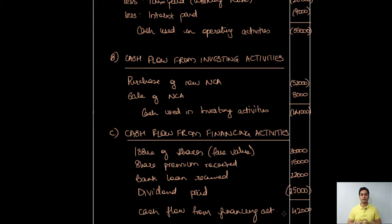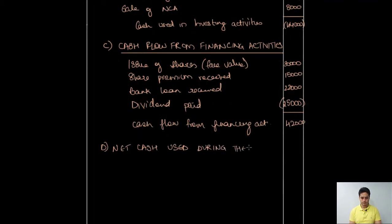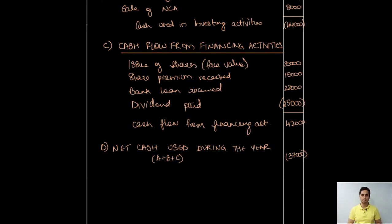After calculating cash flows under all three activities, the next step is to total them to arrive at the net cash position for the year. The net cash used during the year was negative 37,000 — the business paid out 37,000 net cash. We then add the opening cash and cash equivalents balance to the net cash used during the year to arrive at the closing cash and cash equivalents balance.